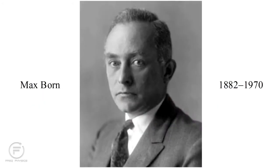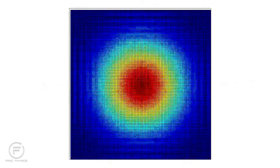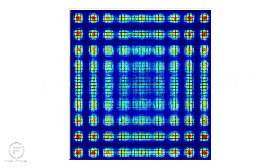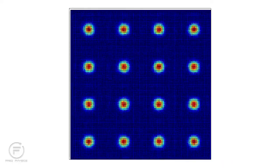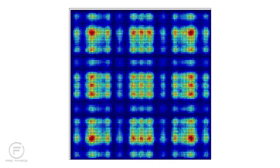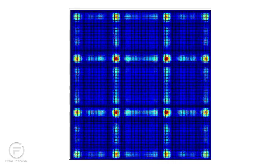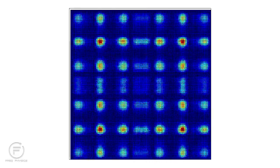It was Max Born who proposed what has become the standard interpretation of Schrödinger's wave function. The squared magnitude of the wave function represents the probability of finding the electron at some point in space at a given time.